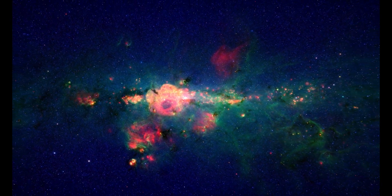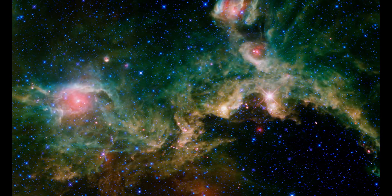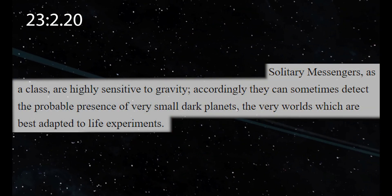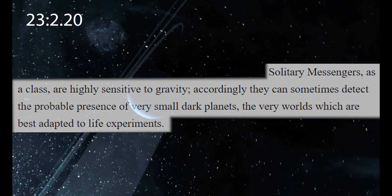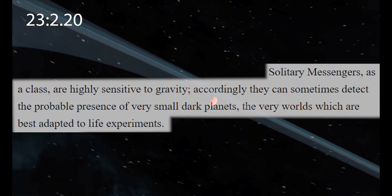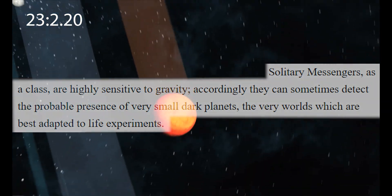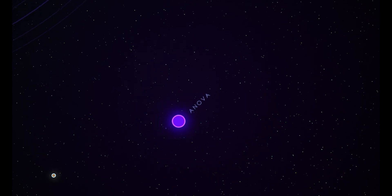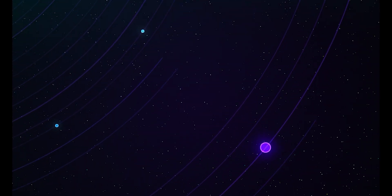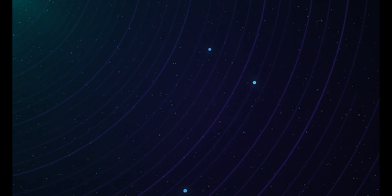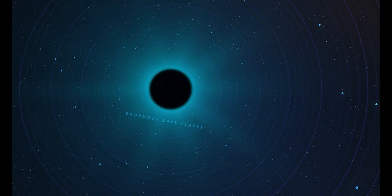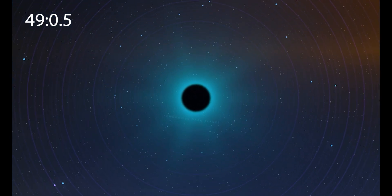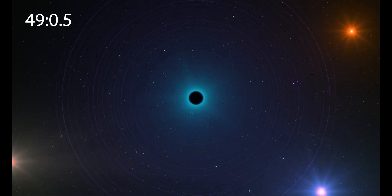The Urantia Book discusses a celestial process for locating small dark planets in deep space. Solitary Messengers, as a class, are highly sensitive to gravity. Accordingly, they can sometimes detect the probable presence of very small dark planets — the very worlds which are best adapted to life experiments. These dark rogue planets can even have inhabited satellites. The oldest inhabited world of Satania, world number one, is ANOVA — one of 44 satellites revolving around an enormous dark planet, but exposed to the differential light of three neighboring suns. ANOVA is in an advanced stage of progressive civilization.